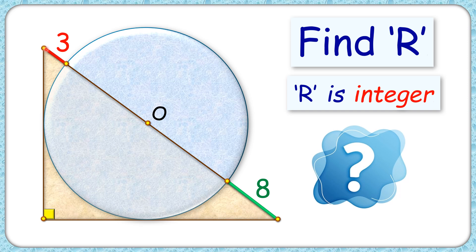The length of the red line segment is 3 centimeters and the green line segment is 8 centimeters. The exciting part is with this limited information we have to find the radius of the circle which is given as an integer.